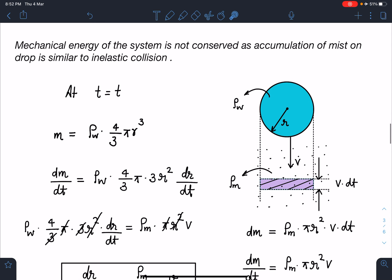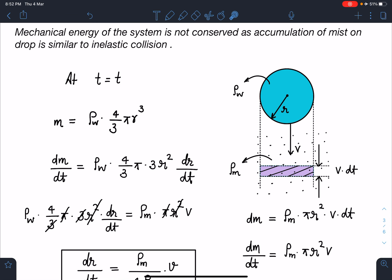Let's analyze the motion of this drop. At any time t, let's say drop is having a speed of v and its radius has become r. Density of water is ρ_w and density of the mist is ρ_mist. These two terms I am assuming from my side, so they should get cancelled in the end.